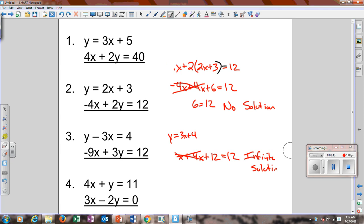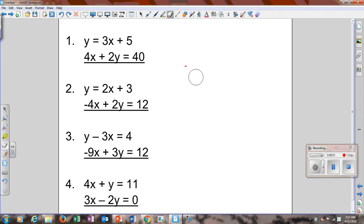Number 4. 4x plus y equals 11. You can start by getting y by itself. It gives you y equals negative 4x plus 11. Then plug that in. It gives you 3x. I will go ahead and do the whole distribution stuff here. So it gives you 3x plus 8x minus 22 equals 0.